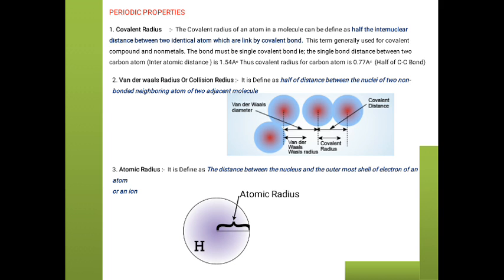The first periodic property is covalent radius. Covalent radius is defined as half the internuclear distance between two identical atoms which are linked by a covalent bond. In the picture we can clearly see that when two identical atoms are linked together by a covalent bond, whatever distance exists between them, half of that internuclear distance is called the covalent radius. This term is generally used for covalent compounds and non-metals.